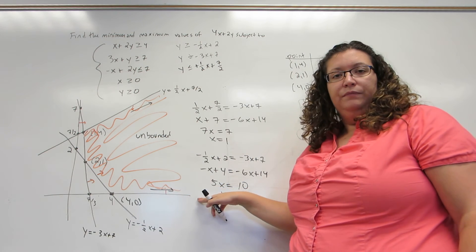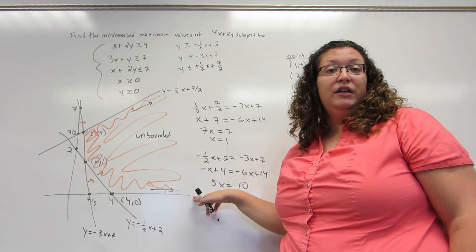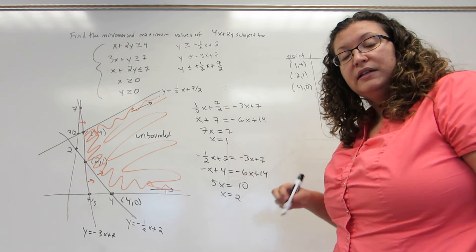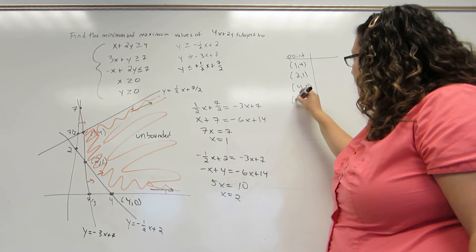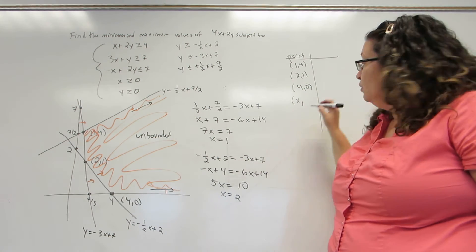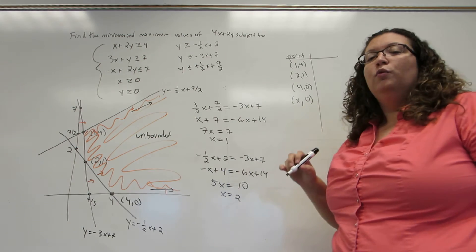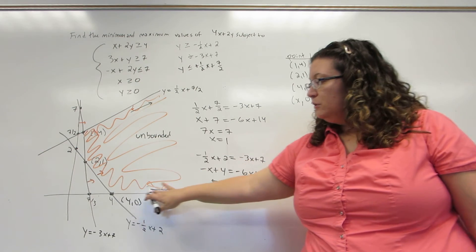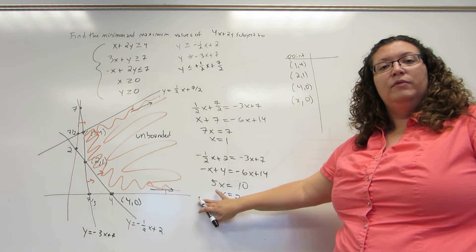When we look at this boundary, every point on this boundary is a point on the X axis. And points on the X axis all look the same. They have an X coordinate, which I don't know, but their Y coordinate is always 0. So points on this boundary will always look like X comma 0.